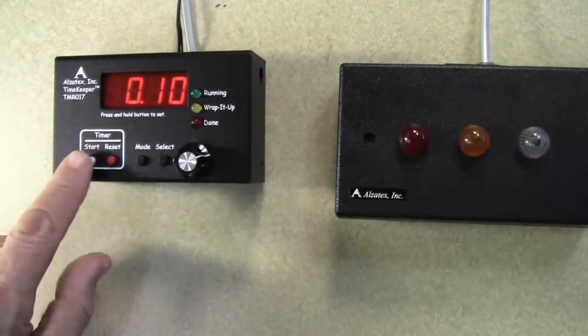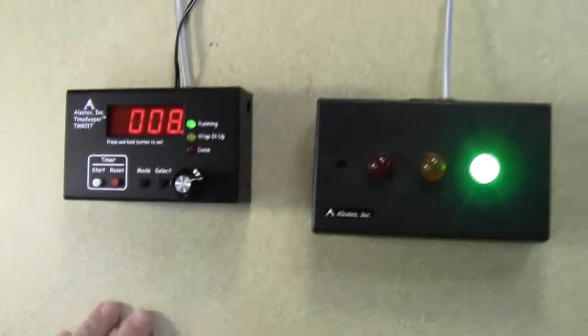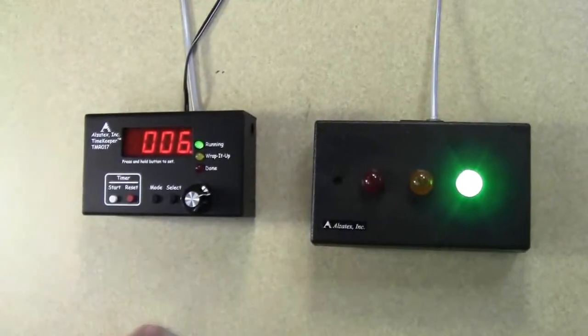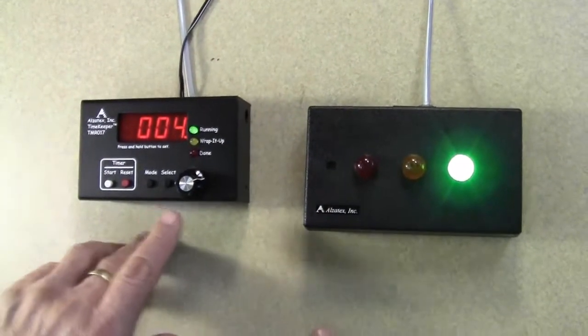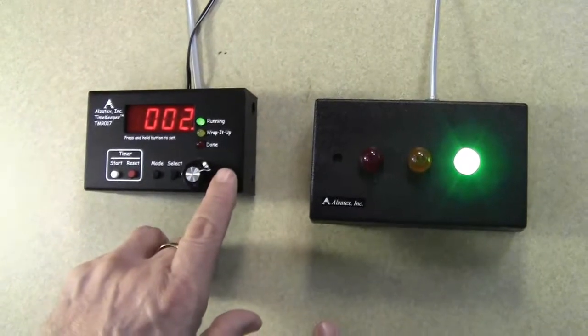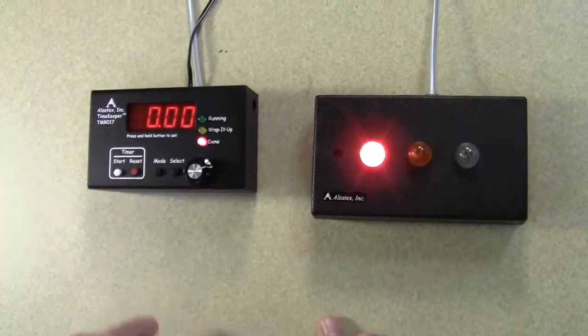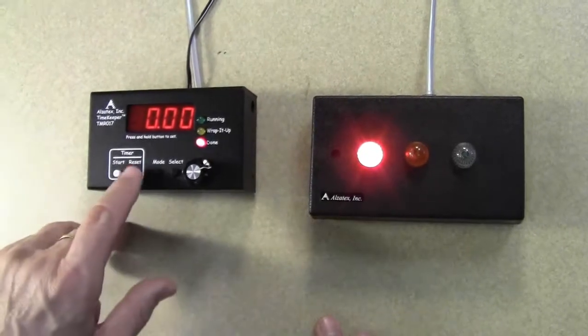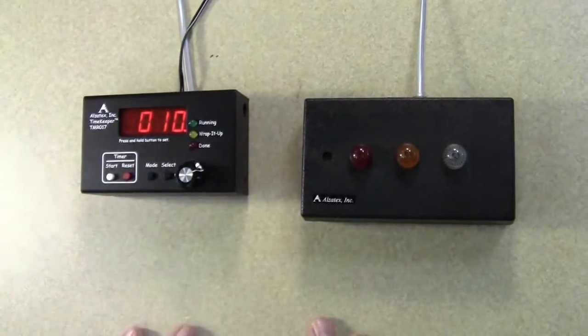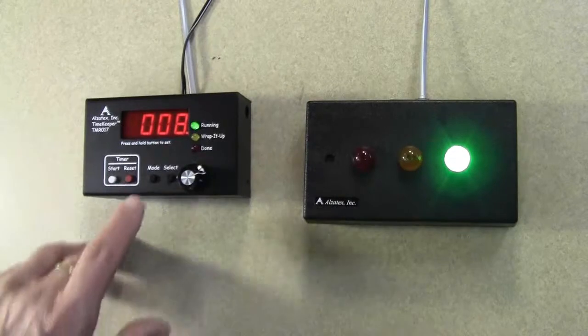Now I'm going to press reset, and start. It starts counting down to zero. Now watch it here as it gets closer to zero. The yellow light will come on. And when it gets to zero, the red light will come on and it will beep. Press reset, start, and we're repeating the same process.